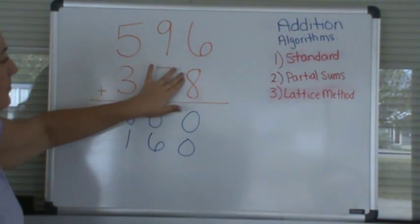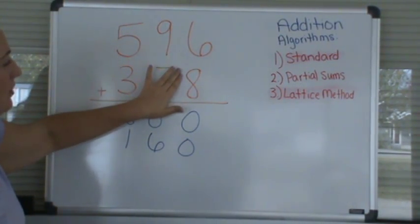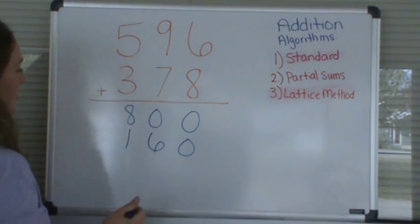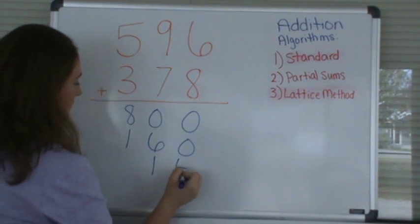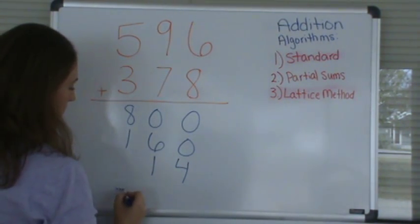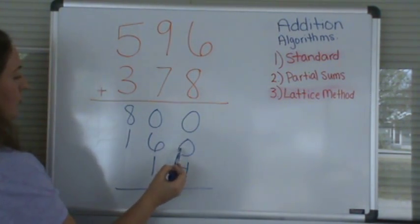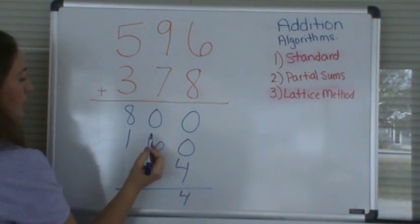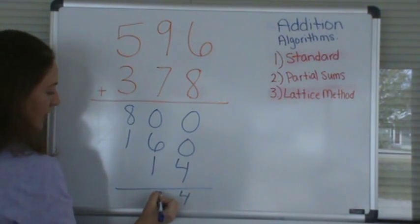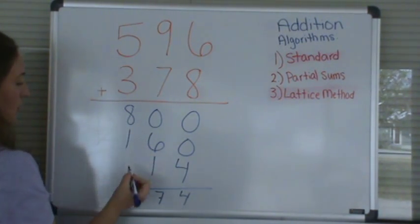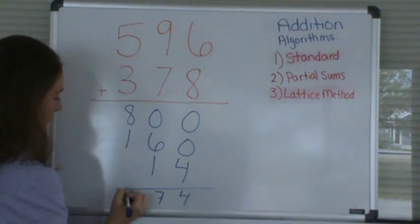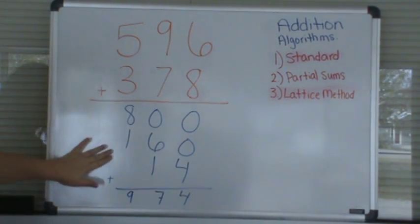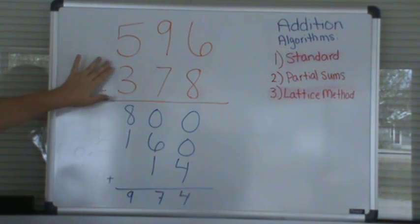Now we will add 6 plus 8. These digits represent the ones place, so this is just 6 and 8, and 6 and 8 is 14. Now we add 0 plus 0 plus 4, which is 4, 0 plus 6 plus 1, which is 7, and 8 plus 1, which is 9. So as you can see, this method works well if you want to add by place value.